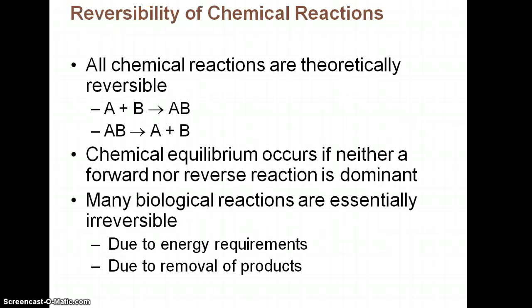Reversibility of chemical reactions: all chemical reactions are theoretically reversible. If you have A and B form AB, you can break apart AB to form A and B again. A chemical equilibrium occurs if neither the forward nor reverse reaction is dominant. But many biological reactions are pretty much irreversible in our bodies — either due to energy requirements, because it involves so much energy to do the reverse reaction that we just can't provide that...